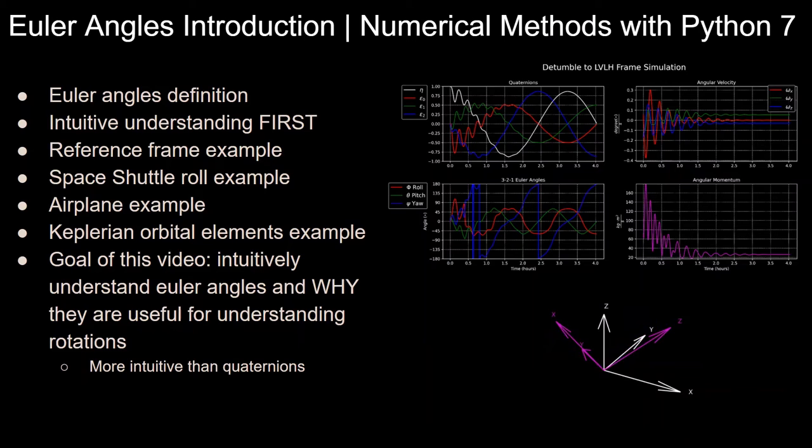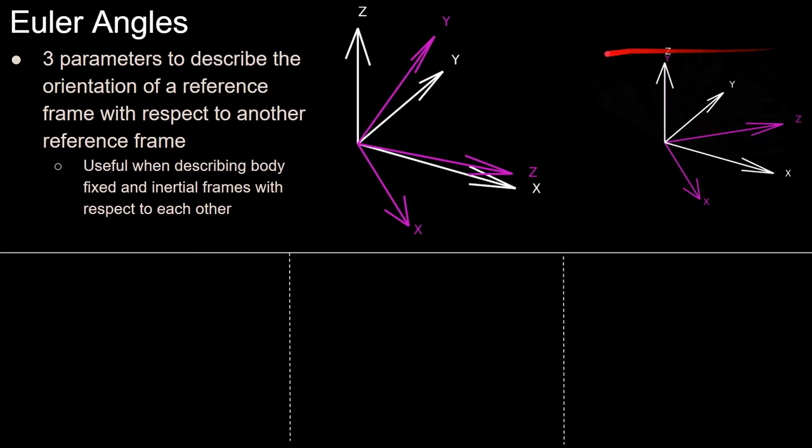This is the seventh video in this series, and we'll be going over Euler angles definition, making sure you get an intuitive understanding before we go over the math. We'll cover a reference frame example, space shuttle roll example, airplane example, and Keplerian orbital elements. Again, the goal of this video is to intuitively understand Euler angles and why they are useful for understanding rotations.